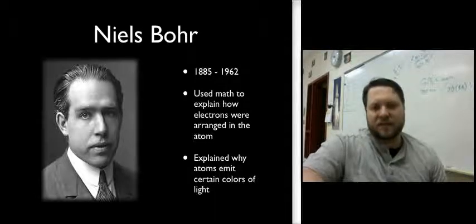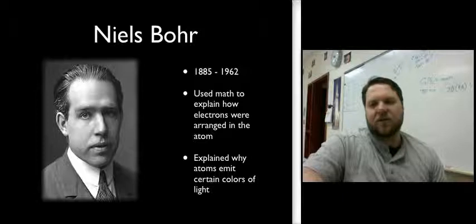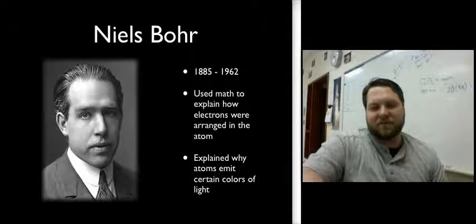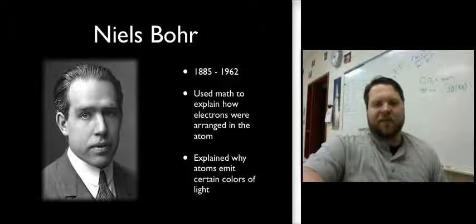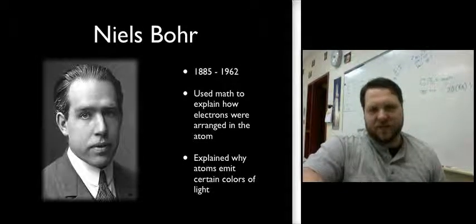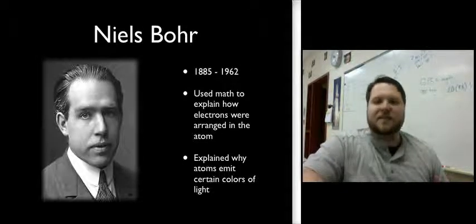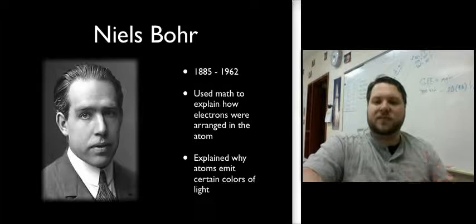And Niels Bohr was a student of Rutherford's. And he was working on Rutherford's planetary model of the atom because everybody knew that that planetary model of the atom couldn't work. If the electrons were, in fact, circling the nucleus, as they circle, because they have charge, things that have charge, as they move, as they accelerate,